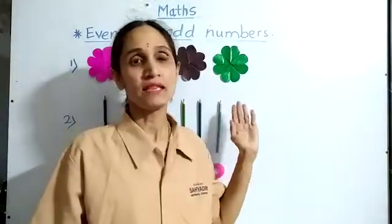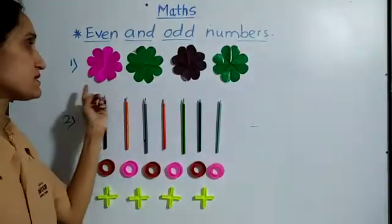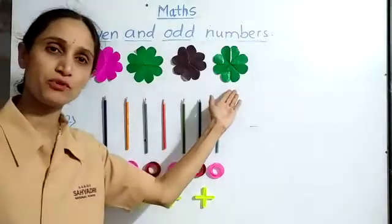Let's see with the help of some objects first. Here I have some flowers. Let's count them. 1, 2, 3 and 4 flowers.